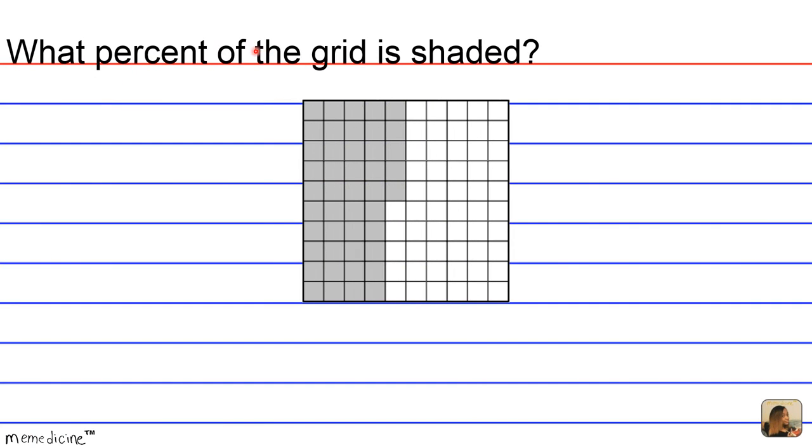What percent of the grid is shaded? Is it A, 35%, B, 40%, C, 45%, or D, 55%?